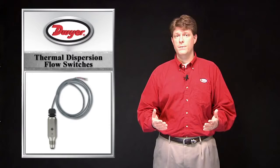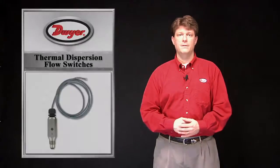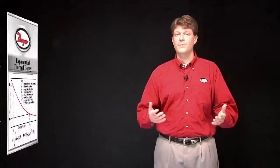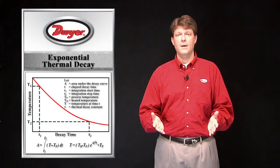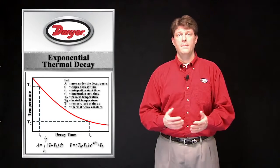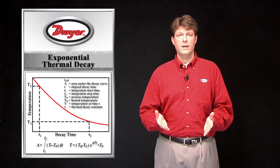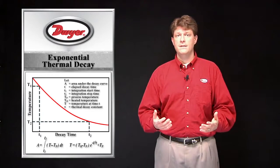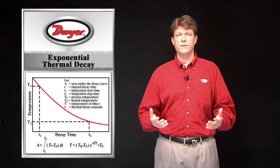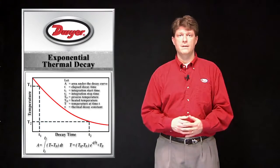Dwyer Instruments offers several flow measuring products that use a thermal sensing element. Thermal dispersion flow sensors use a temperature element that is heated up beyond the media temperature. Based on calorimetry, the flow moving past the sensor will have a cooling effect that is directly proportional to the flow velocity. The heat is convected from the heated probe surface to the boundary layer of the fluid flowing over the heated surface.